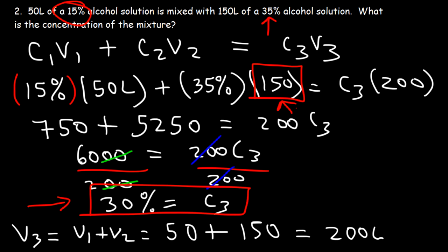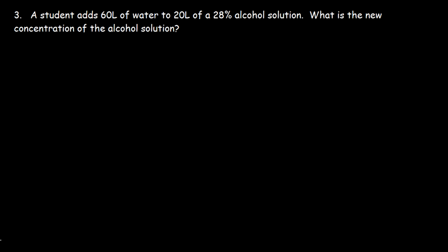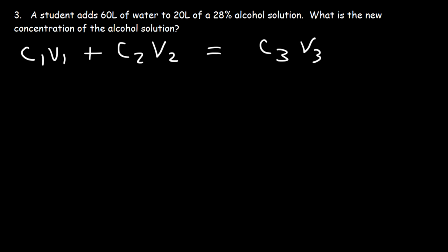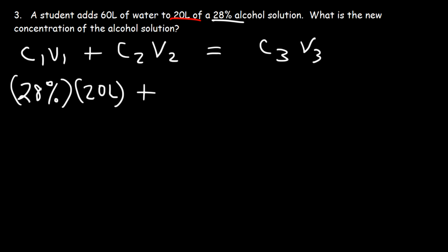Now, if the second volume were also 50 liters, then C3 would have a concentration of 25% — right in the middle. Since we have a lot more of the 35% solution, the mixture has a higher concentration close to 35%. Problem three: a student adds 60 liters of water to 20 liters of a 28% alcohol solution. What is the new concentration of the alcohol solution? Let's use the same formula: C1·V1 + C2·V2 = C3·V3. C1 is 28% — the concentration of the first solution — associated with a volume of 20 liters.